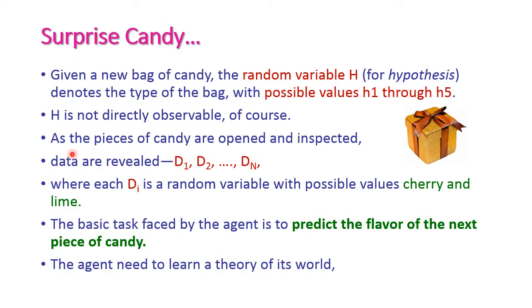We open the bag and take one piece of candy. The candies inside the bag are n different candies — in our example, there are eight different candies d1 to dn, where di is a random variable with possible value of cherry or lime. The problem is to predict the flavor of the next piece of candy — either lime or cherry — so the agent needs to learn the theory of its uncertain environment.